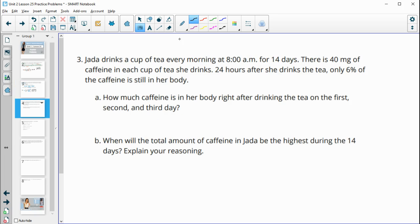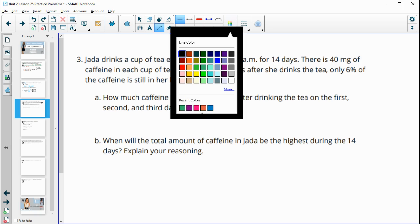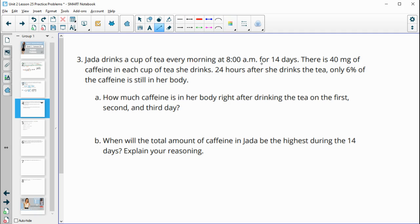Number three, Jada drinks a cup of tea every morning at 8 a.m. for 14 days. There's 40 milligrams of caffeine in each cup of tea that she drinks. 24 hours after she drinks the tea, 6% of the caffeine is left in her body. So we see some different things here. We see the n value, so the number of days she's doing this for is 14. We see the initial value, which is the 40 milligrams of caffeine that's in each cup she drinks. And then we also see that after each day, only 6% of the caffeine is still in her body. So that's giving us our rate here.